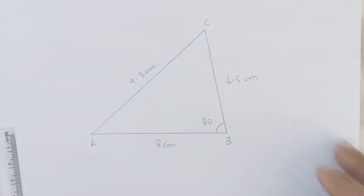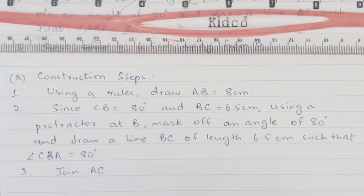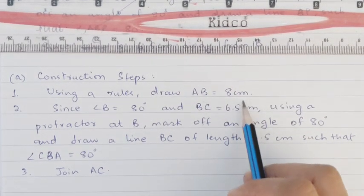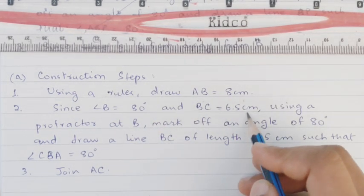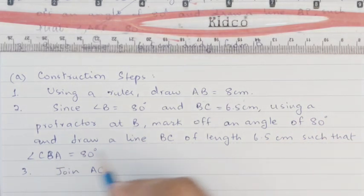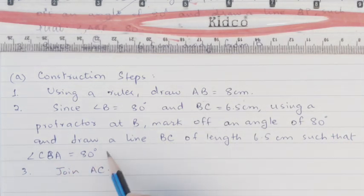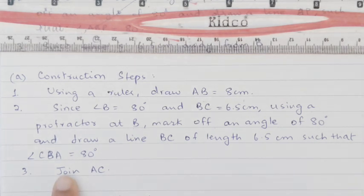Construction steps: (1) Using a ruler, draw AB = 8 centimeters. (2) Since angle B = 80 degrees and BC = 6.5 centimeters, using a protractor at point B, mark off an angle of 80 degrees and draw line BC of length 6.5 centimeters such that angle CBA = 80 degrees. In this step we cover both marking the angle and drawing the line BC. Then join AC. The angle and its adjacent side are both given at point B, making it straightforward to draw.